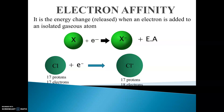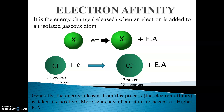Now it has a stable noble gas configuration, and some amount of energy is released after the addition of one electron — that energy is electron affinity. Generally, the energy released from this process, that is electron affinity, is taken as positive.